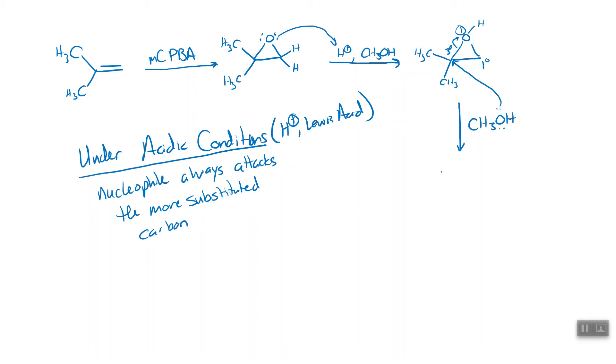And so we end up with something that looks like this, where the methanol has attacked the tertiary carbon, and so we have this OCH3 group attached to the tertiary carbon, and we have a primary alcohol. This is what happens under acidic conditions.